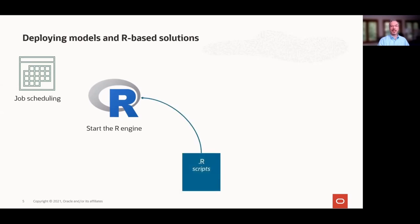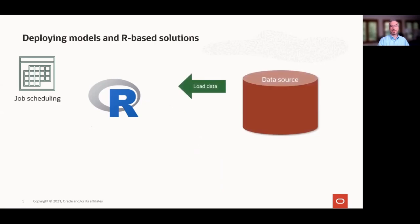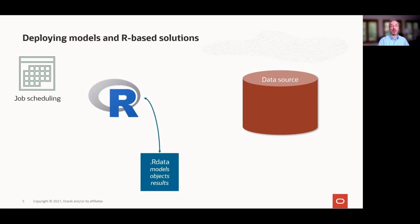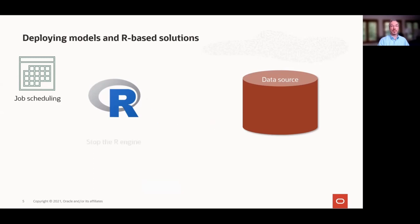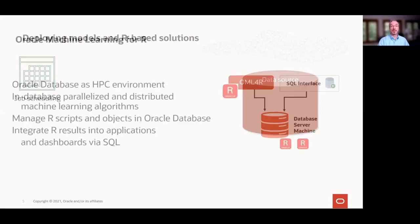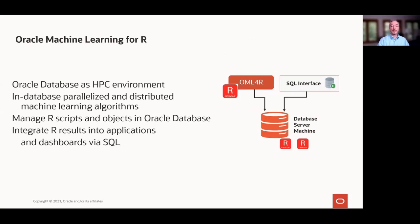Deploying a solution often involves a job scheduling environment, starting the R engine, loading the R script, loading source data for model building or scoring, reading/writing models or objects, storing results back to the data source, and stopping the R engine until next time. While deployment complexity may vary, there are at least a few potential failure conditions to account for. We overcome these challenges by leveraging Oracle Database as a high-performance compute engine.